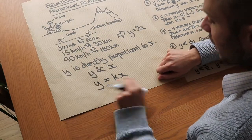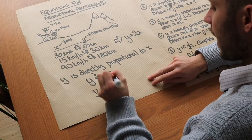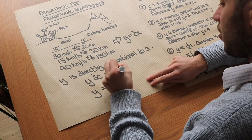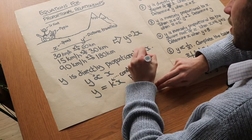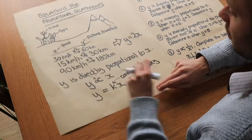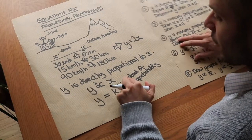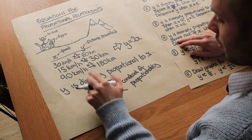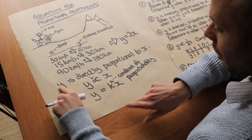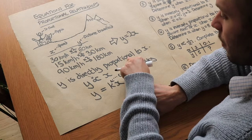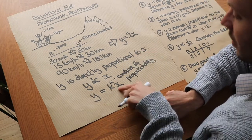That scale factor is k, which we worked out was 2. This value k is known as the constant of proportionality — it's the scale factor between the two variables x and y. So whenever you see the words 'is directly proportional to' you can replace it with 'equals k times': y equals k times x.